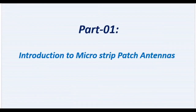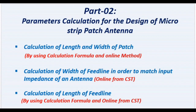In part one we will shortly introduce the microstrip patch antennas. In part two we will discuss about the parameter calculations for the design of microstrip patch antennas, in which first we will calculate the length and width of the patch using calculation formulas as well as online methods. Secondly we will calculate the width of the feed line in order to match the input impedance of the antenna, calculated online from CST.